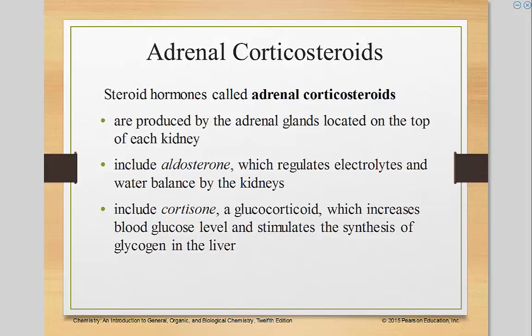Steroid hormones called adrenal corticosteroids are produced by the adrenal glands located on the top of each kidney. They include aldosterone, which regulates electrolytes and water balance in the kidneys, and cortisone, or glucocorticoid, which increases blood glucose levels and stimulates the synthesis of glycogen in the liver.